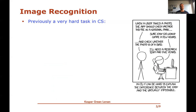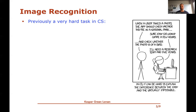Image recognition used to be a very hard task in computer science, highlighted by this XKCD comic strip where two people are talking. One tells a developer: when a user takes a photo, the app should check whether they're in a national park. The developer says sure, easy GIS lookup, give me a few hours. Then the supervisor says it should also check whether the photo is of a bird — to which the researcher replies: I'll need a research team and five years. The caption reads: in computer science it can be hard to explain the difference between the easy and the virtually impossible.